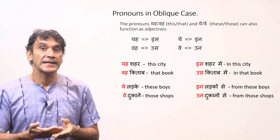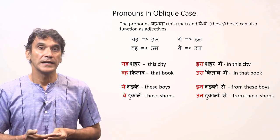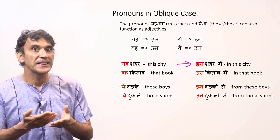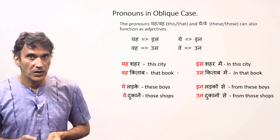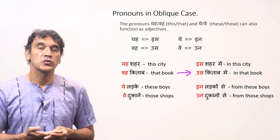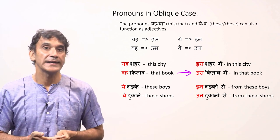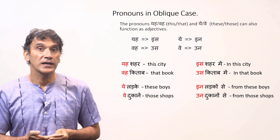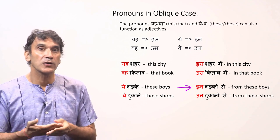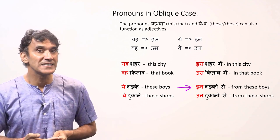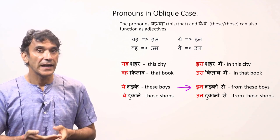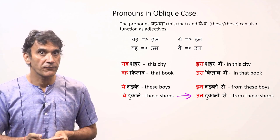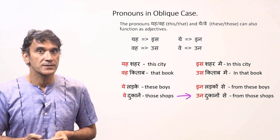Before a postposition, the pronouns decline as usual. यह becomes 'इस' — 'इस शहर में' means 'in this city'. वो becomes 'उस' — 'उस किताब में' means 'in that book'. For plural, यह becomes 'इन' — 'इन लड़कों से' means 'from these boys'. And वे becomes 'उन' — 'उन दुकानों से' means 'from those shops'.